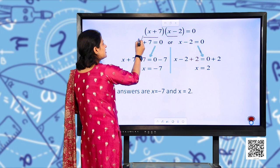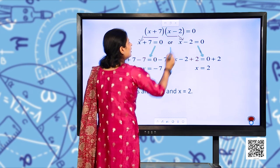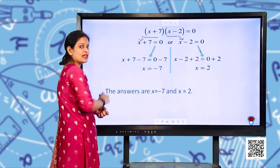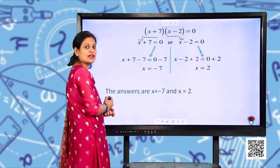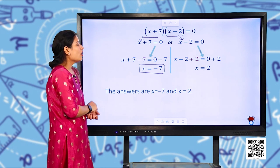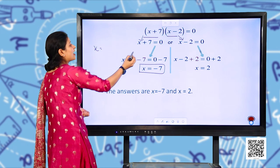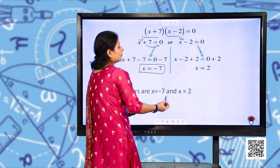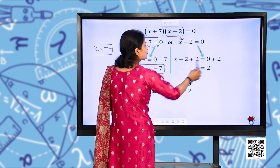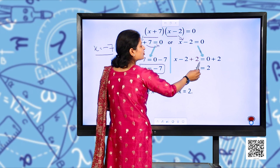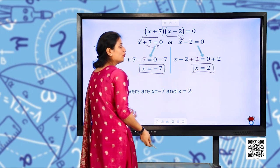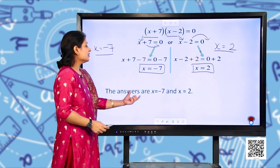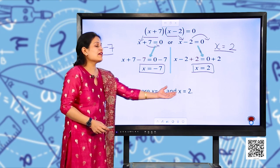So we have (x + 7)(x − 2) = 0, which means x + 7 = 0 or x − 2 = 0. For the first: subtract 7 from both sides, so x = −7. For the second: add 2 to both sides, giving x = 2. Alternatively, transpose the constants — positive becomes negative, negative becomes positive. So the values of x are −7 and 2.